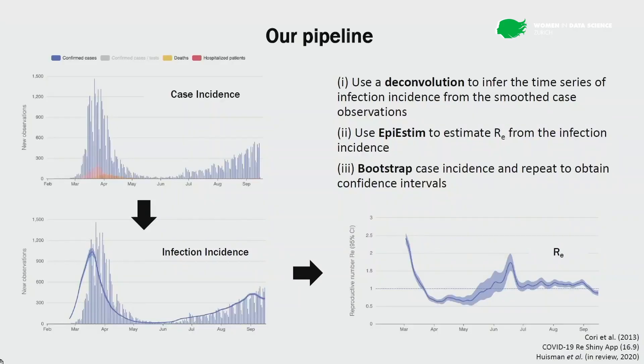Once we have infection incidence, we use existing methods to estimate R_E from it. This was a problem addressed during previous pandemics like Ebola. The method, EpiEstim, provides an estimate of uncertainty around R_E. However, it doesn't account for uncertainty from the observation process itself. That's why we added an additional step where we bootstrap the case incidence data using block bootstrap, repeating this process many times to create more realistic confidence intervals — because when giving advice to policymakers, having a good uncertainty estimate is crucial, perhaps even more important than having an exact point estimate.